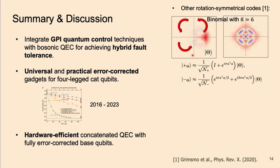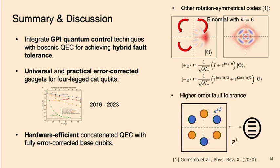I want to emphasize that although I used the four-legged cat qubits as an example, the ideas here can actually be applied to other rotation-symmetry qubits as well, as long as the base code has some locality property in the phase space — for instance, you can also apply it to the binomial qubits. You can also extend this idea to higher-order fault tolerance: if you use a six-legged cat, you can correct two photon losses, and if you use a four-level ancilla, you can suppress everything to third order, giving you even better error-corrected base qubits.